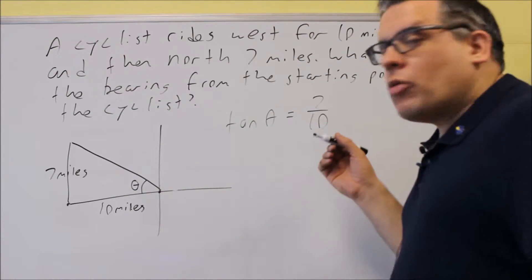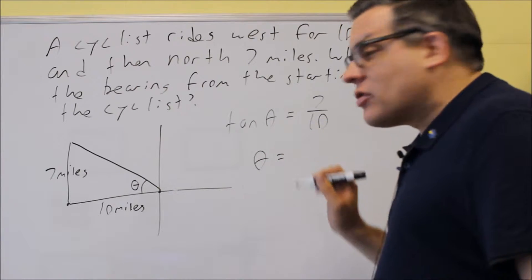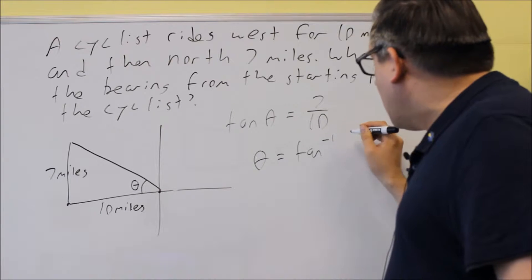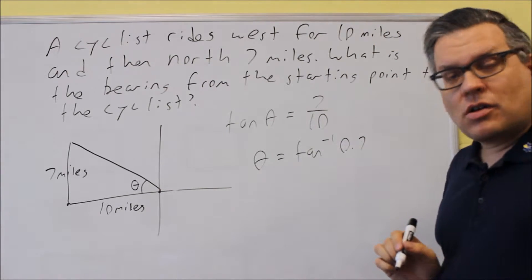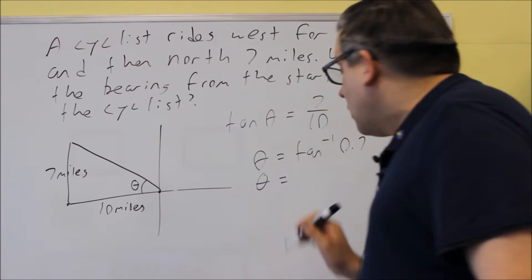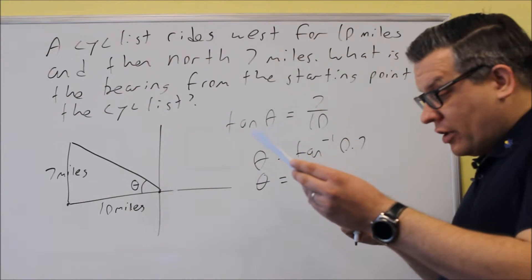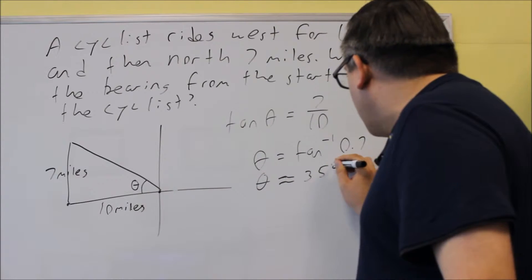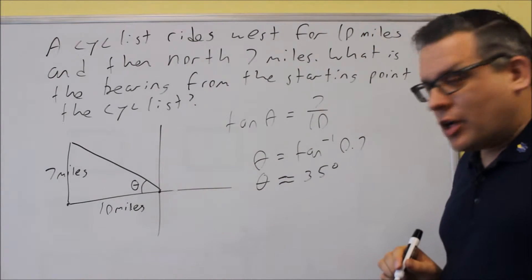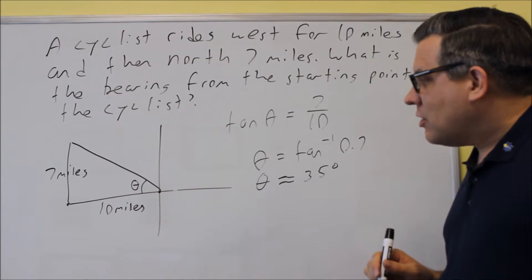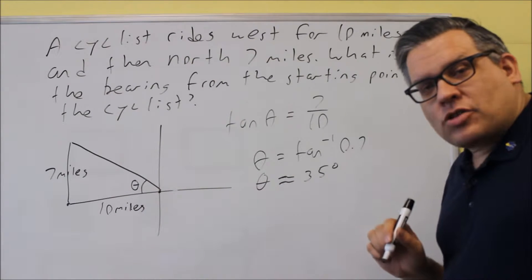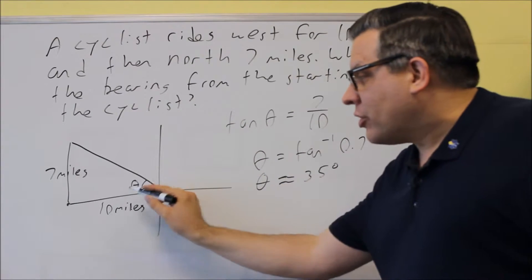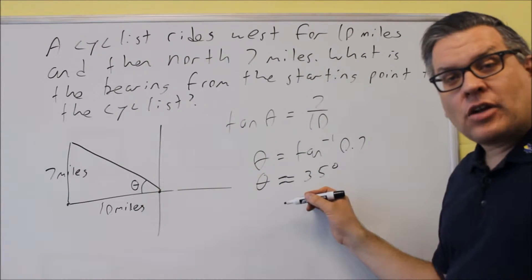To figure out what theta is, I'm going to take the inverse tangent of both sides. Inverse tangent of 0.7, putting that into my calculator, gives approximately 35 degrees. So that's the angle inside the triangle.